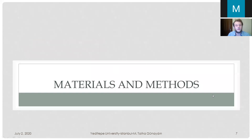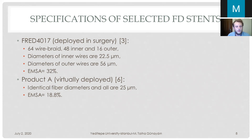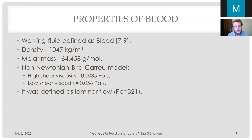For this study, two flow diverter stents were chosen. The first is FRED-4017, which was used in surgery. It has a 64-wire braid configuration: 48 wires with a diameter of 22.5 micrometers and 16 wires with a diameter of 56 micrometers. The other flow diverter stent was Product A, which unlike the other has identical fiber diameters — all 25 micrometers — and an AMSA value of 18.8%. For the working fluid, blood was chosen and defined as a non-Newtonian Bird-Carreau model with specified low and high shear viscosity values.